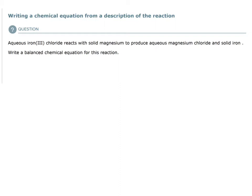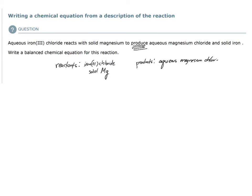The first thing we need to do is identify what our reactants and what our products are. Our reactants — the things going into this reaction — are iron(III) chloride and solid magnesium (element symbol Mg). Our products are aqueous magnesium chloride and solid iron (element symbol Fe).